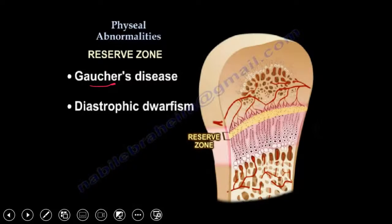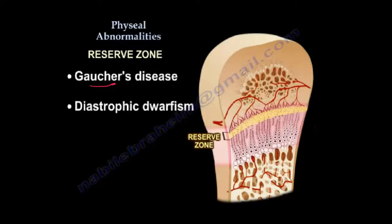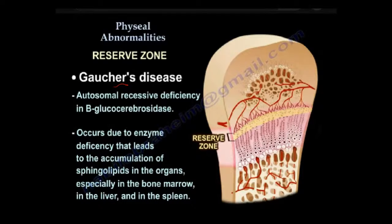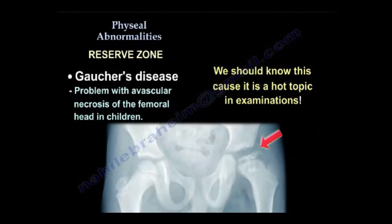Let's start with the reserve zone. You can have two problems: Gaucher disease and diastrophic dwarfism. The reserve zone is affected by Gaucher disease — it's an enzyme problem, so it is autosomal recessive. It can create avascular necrosis of the femoral head in children. If you find an X-ray of a child with bilateral avascular necrosis on an exam, it is Gaucher disease.